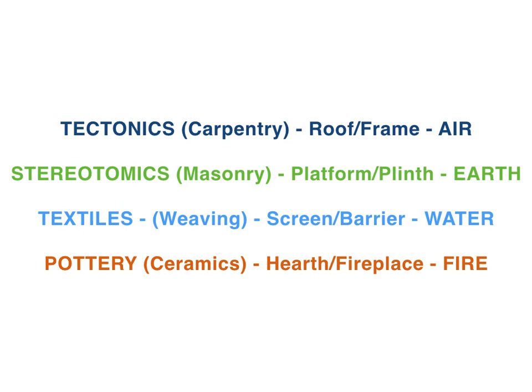Semper needed to give his Practical Aesthetics some foundational ideas, but he wanted to avoid the classical principles that still haunted architectural theory in those days. Semper decided to base his Practical Aesthetics on four common methods of building, which he called the elements of architecture.